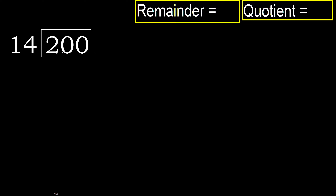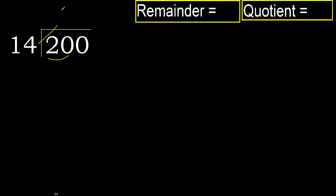200 divided by 14. 2 is less, therefore next. 20 is not less, therefore with 20, 14 multiplied by which number is nearest to 20?